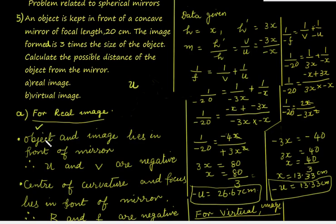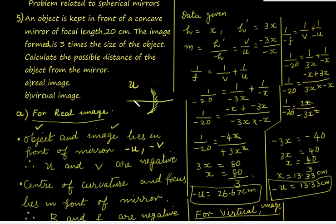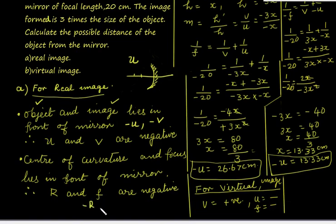The object lies in front of the mirror whether it is a concave mirror, convex mirror, or a plane mirror. For real image, the image also lies in front of the mirror, so the distances u and v both become negative. For the concave mirror, the center of curvature and focus also lie in front of the mirror, so we have negative r and negative f.